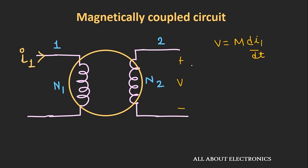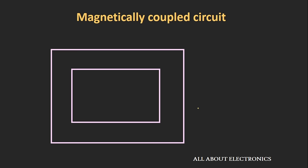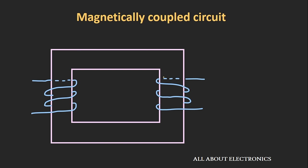The polarity of the voltage induced in the nearby coil depends upon the way the winding has been wound around the core. To understand this, consider a core on which two windings have been wound.